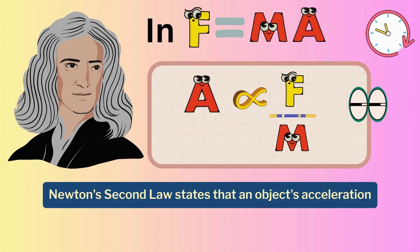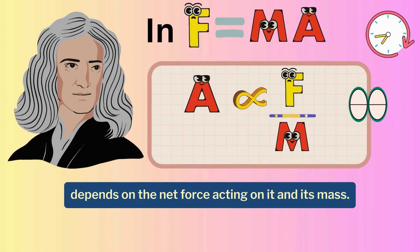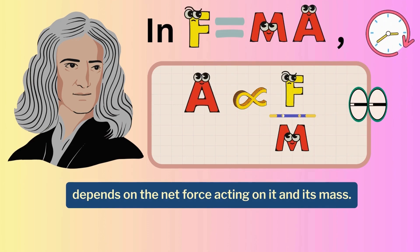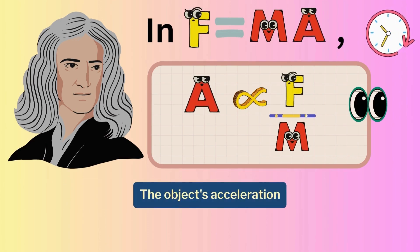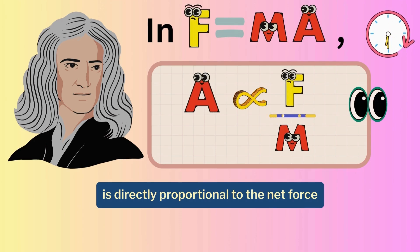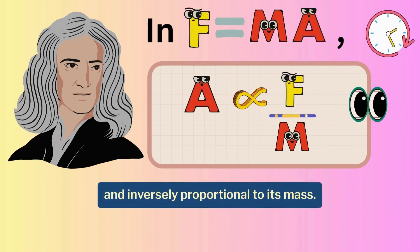Newton's second law states that an object's acceleration depends on the net force acting on it and its mass. The object's acceleration is directly proportional to the net force and inversely proportional to its mass.